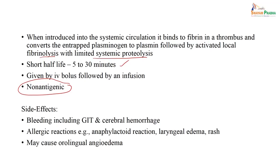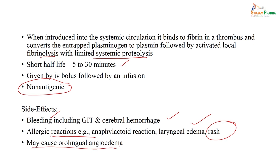What are the side effects or adverse effects of alteplase? It is the most promising drug, but it must be given as early as possible. One of the commonest adverse effects is bleeding — from the gastrointestinal tract or cerebral hemorrhage. Though it is non-antigenic, there are also reports of allergic and anaphylactic reactions. It may cause laryngeal edema or skin rash. There is also a risk of orolingual angioedema, so one has to be very careful.